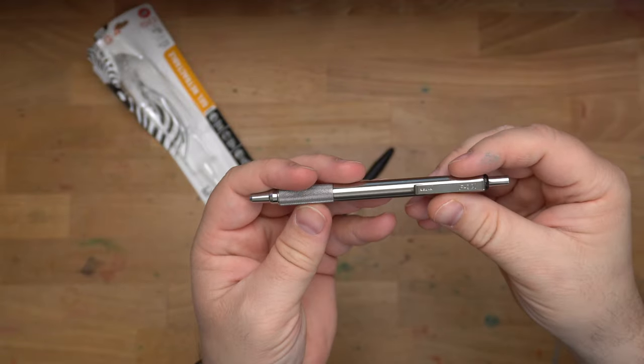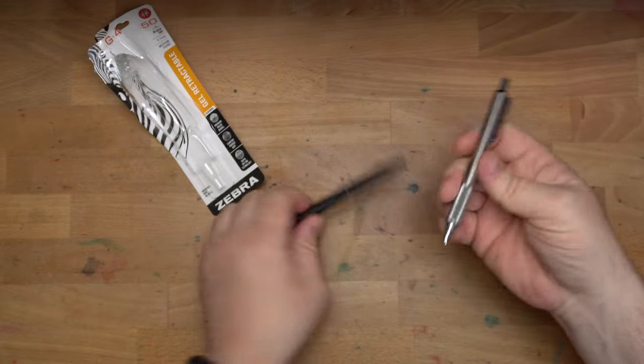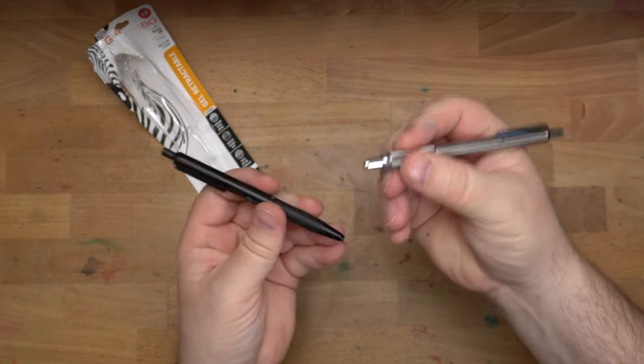This is the F701. There is another version of this now that has a metal piece here, but has this nice little knurled grip, which is good.